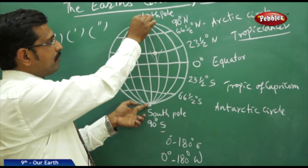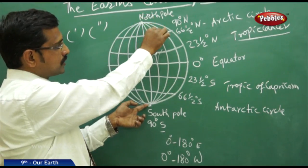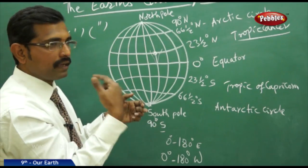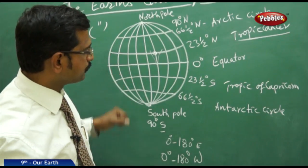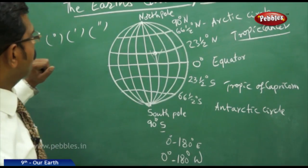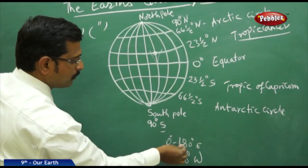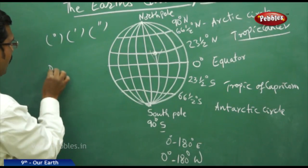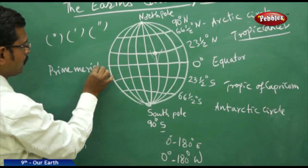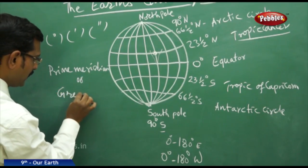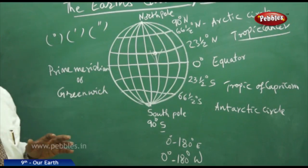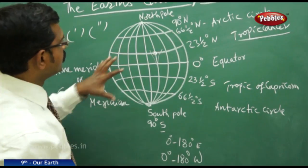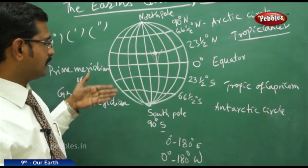Each and every longitude cuts across each and every latitude, and similarly every latitude cuts across every longitude — that is the key thing to understand in the grid system. From zero to 180 degrees, the central line is the prime meridian, also called the Greenwich meridian.